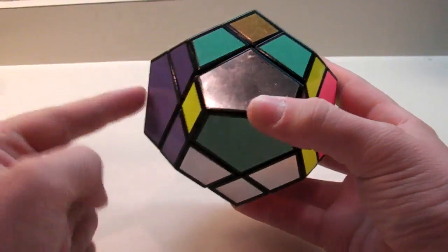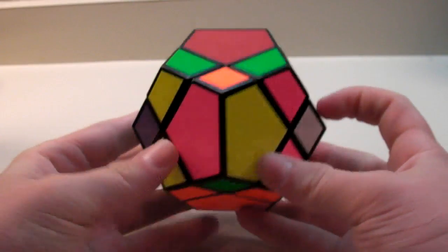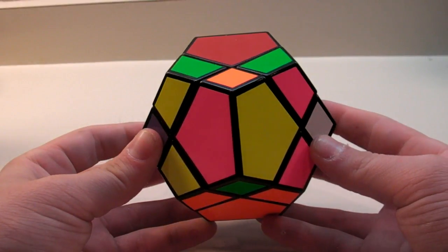Now, as you can see, this one is now correct, but this one, this one, and this one are not correct. Now these four are not correct, and you can go on and finish solving your Skewb Ultimate.